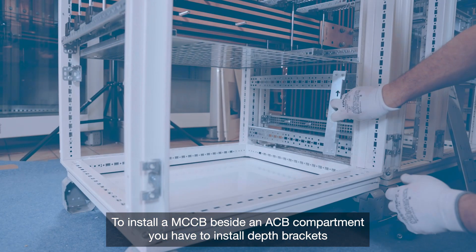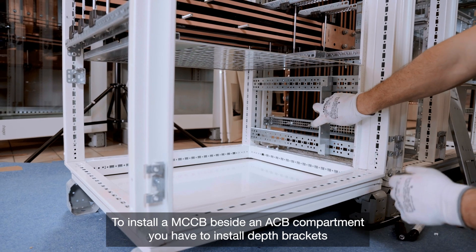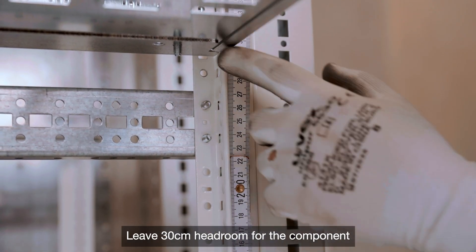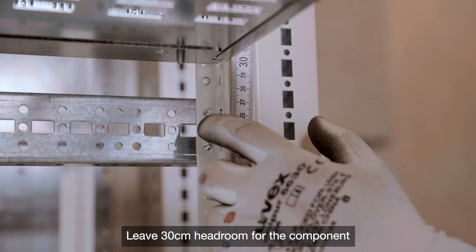To install a MCCB beside an ACB compartment, you have to install depth brackets. Leave 30cm headroom for the component.